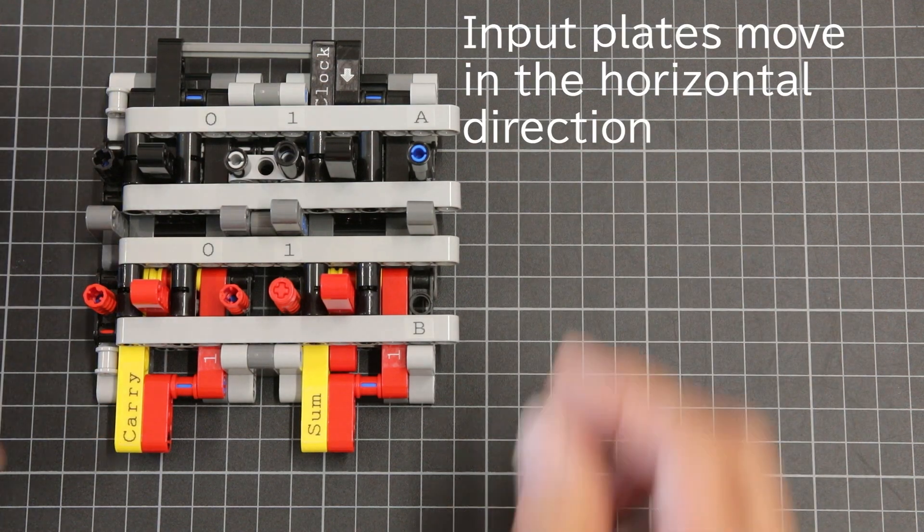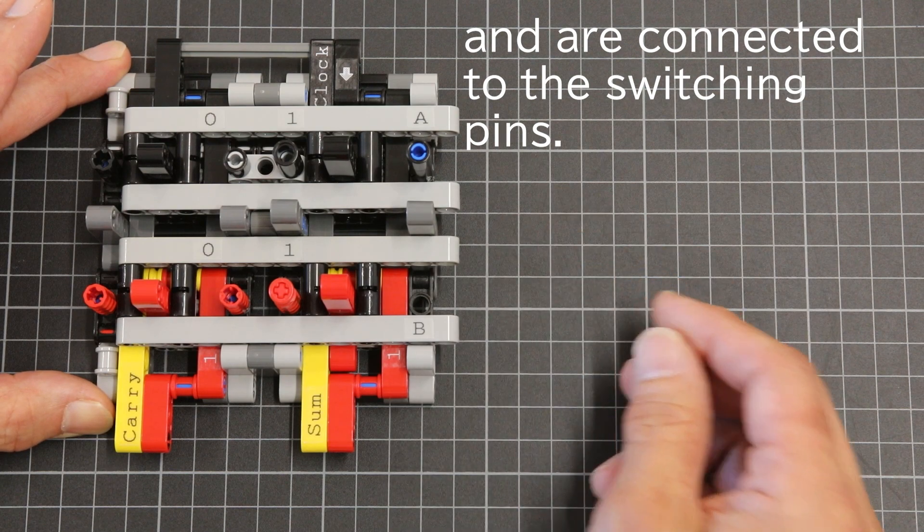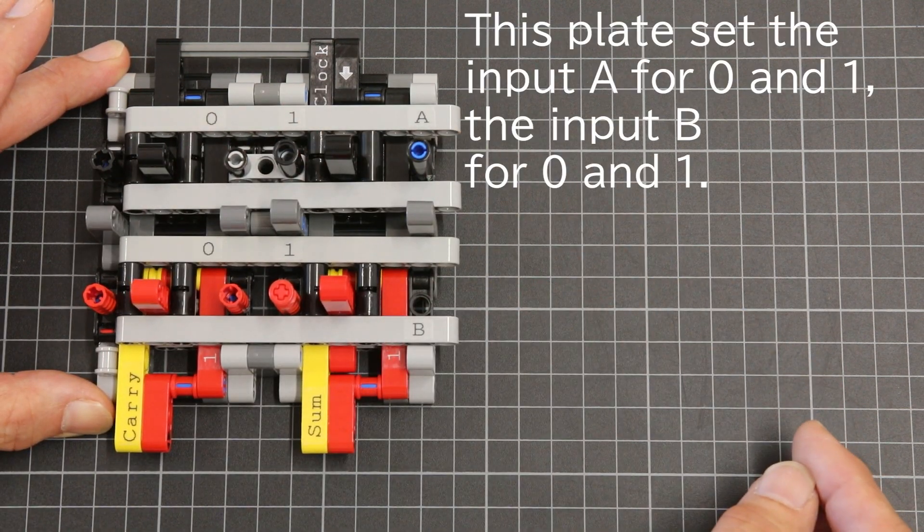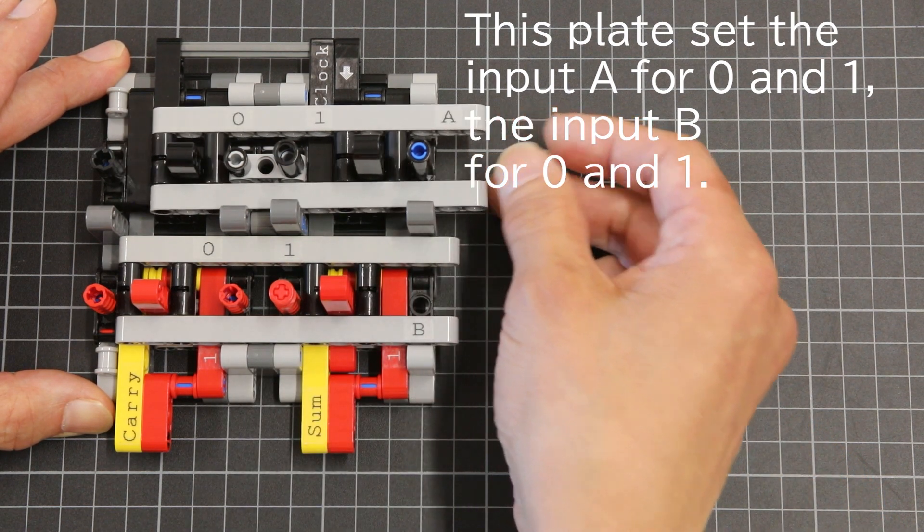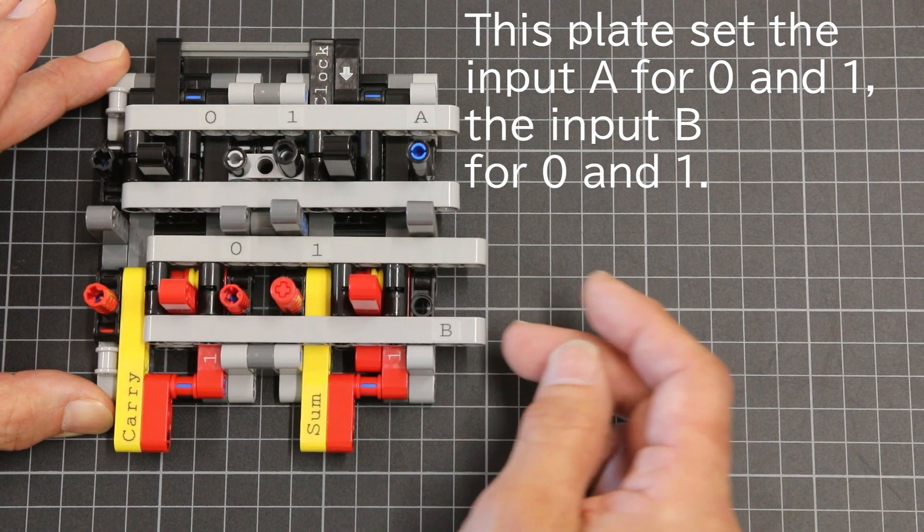Input plates move in the horizontal direction and connect to the switching pins. This plate sets input A to 0 and 1, input B to 0 and 1.